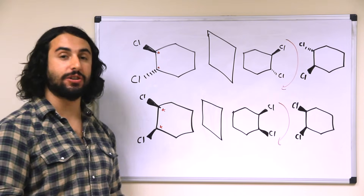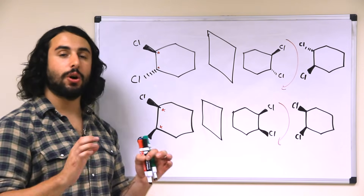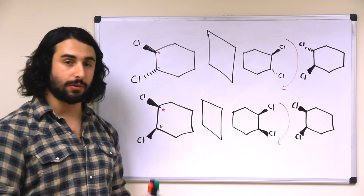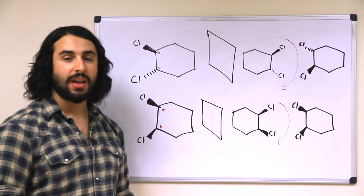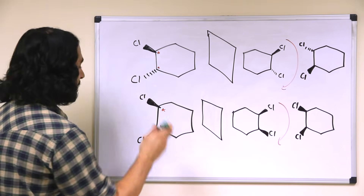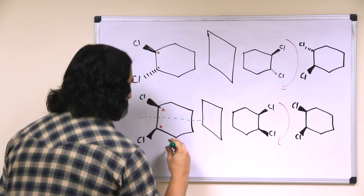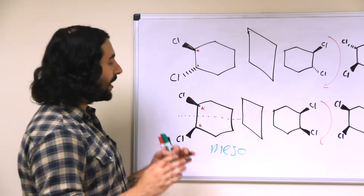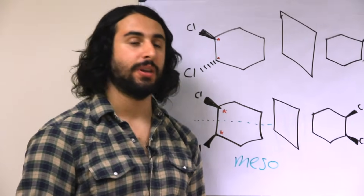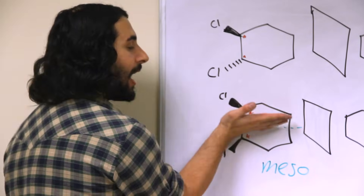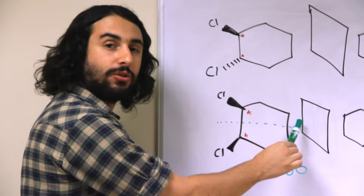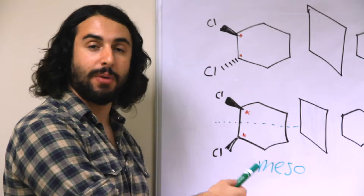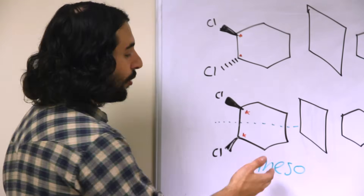It still has two chiral centers, and you ought to be able to assign absolute configuration to each of them. This means it is possible for a molecule to have two or more chiral centers with their own absolute configurations but be achiral overall. There are special terms for this — this is called a meso compound. A meso compound is a compound that has an internal plane of symmetry: the top half of the molecule, when reflected across the central plane, gives accurately the other half.